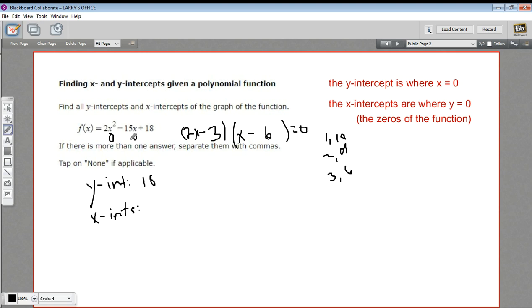If you don't trust me, foil that out. See if you get this. Now let's set each of these equal to 0. So 2x minus 3 equals 0. And then we'll add 3. So we get 2x equals 3. And then divide by 2. So we get x equals 3 halves for one of them.